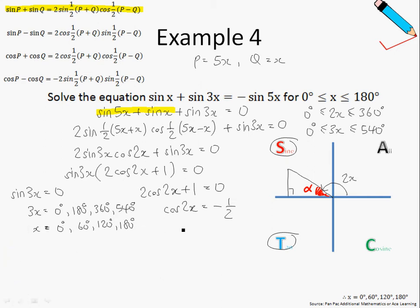So I will write 2x to be 180 degrees—oh sorry, I missed out my alpha. So alpha should just be cosine inverse of half, which is just 60 degrees. Also take note that to find alpha basic angle, we always ignore or omit the negative sign.